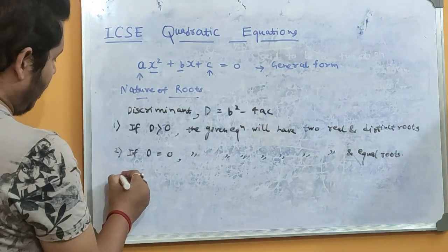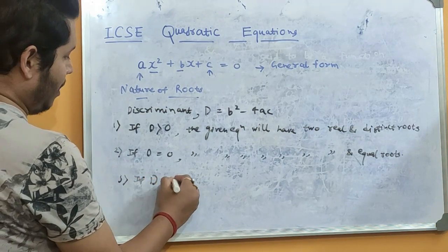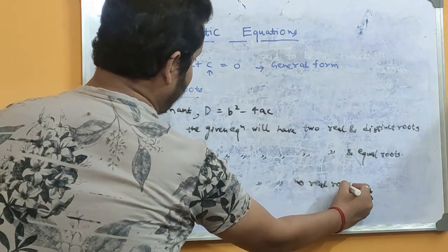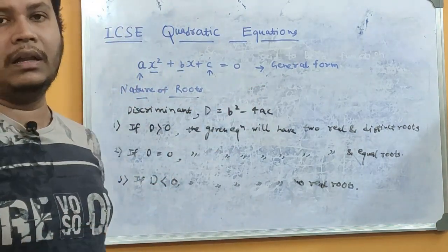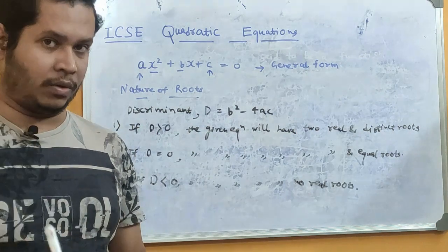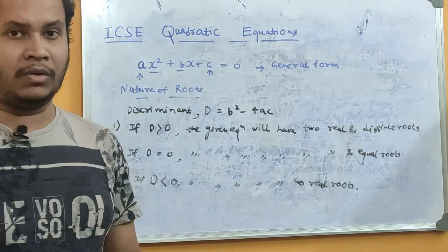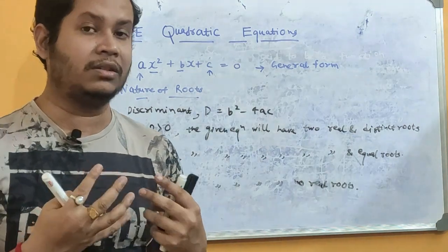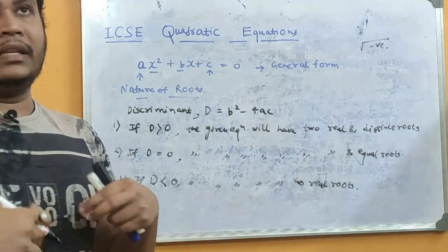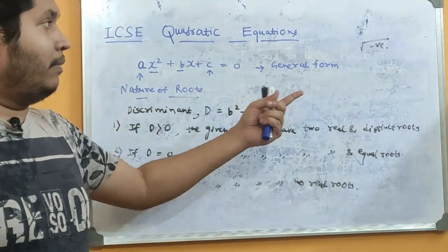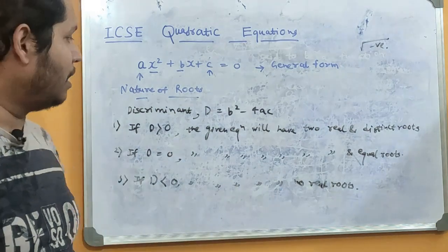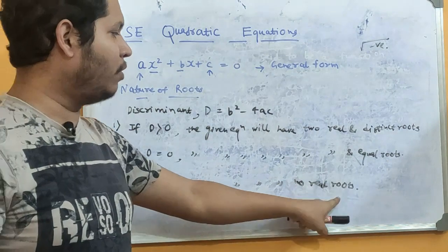The last condition: when D is less than 0, the given equation will have no real roots. Just after this, when we learn how to solve a quadratic equation, you will see that in the formula, D appears inside a square root. If D is negative and comes inside a square root, that case is not defined — we cannot find the square root of a negative number, because the square of any negative number is always positive. So if D is less than 0, the equation has no real roots.